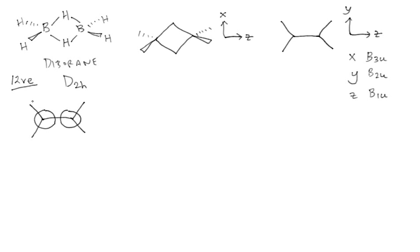I want to start out by trying to make an orbital that will be everywhere bonding. I'll put in the hydrogen contributions with the same sign on all four of the terminal hydrogens, because they all look the same from the perspective of these boron S orbitals. The hydrogens above and below the plane can also come into this orbital with the same positive sign everywhere. In doing so, we've written down the basis for an orbital belonging to the totally symmetric representation of D2H — an A sub G molecular orbital.